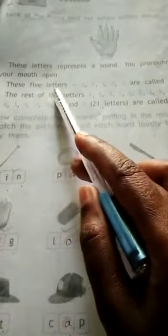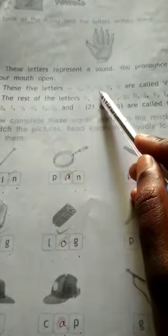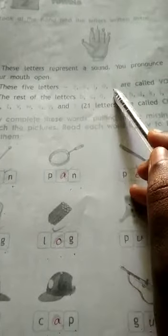These five letters A, E, I, O, U are called vowels.